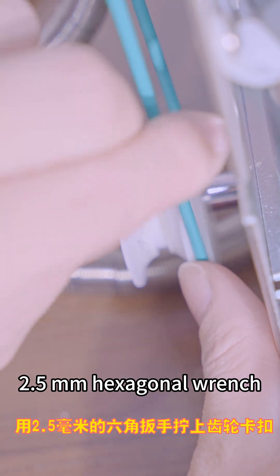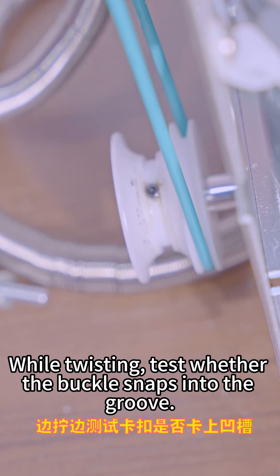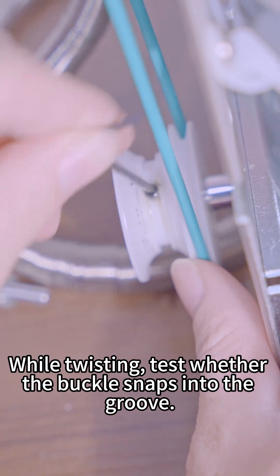Use a 2.5 mm hex wrench to screw on the gear buckle, while twisting test whether the buckle snaps into the groove.